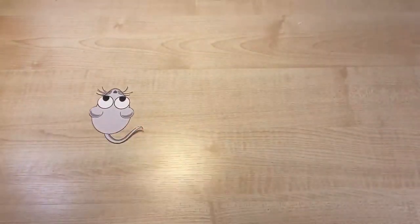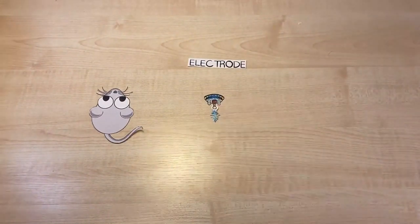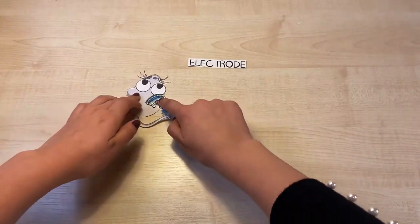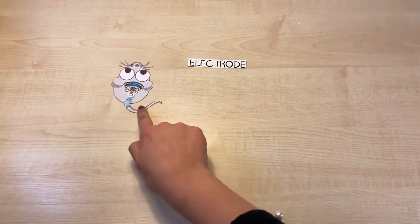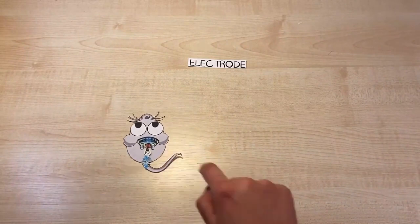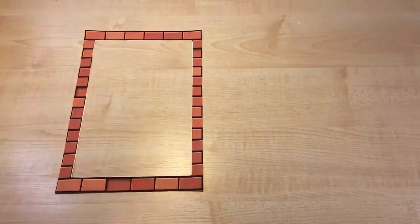Most studies done to understand how we move around the world are done with rodents. Scientists can locate electrodes in the mouse's brain to record the activity of single neurons and help us understand how spatial navigation works. In this way, they have discovered four different types of cells that help us move around the world.